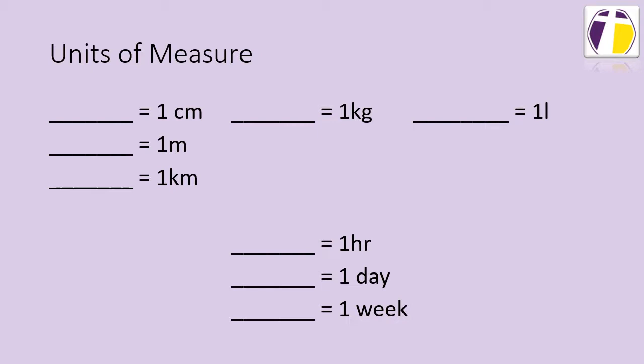So starting off with length, one centimeter is the same as 10 millimeters. One meter is the same as 100 centimeters. One kilometer is the same as 1,000 meters.